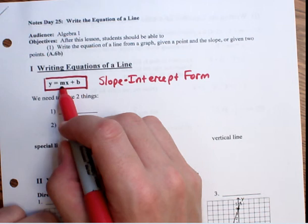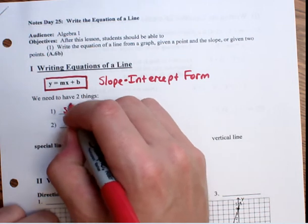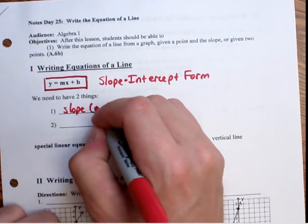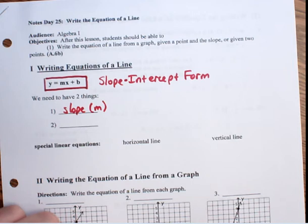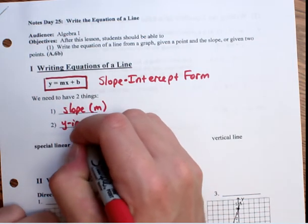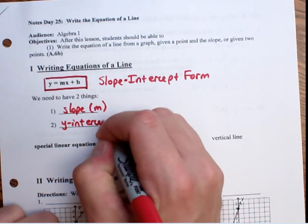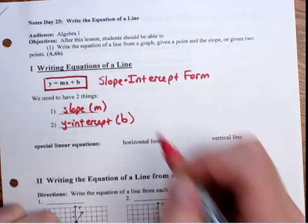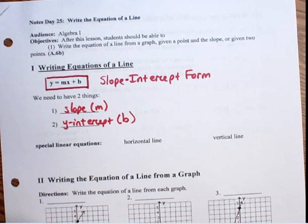The first thing is we need the m, which is the slope. That's the first thing that we need. The second thing that we need to know is the y-intercept, which is the b. And the y-intercept is where we cross the y-axis. So those are the two things we need.